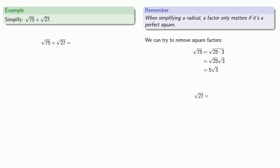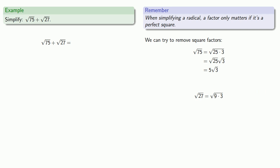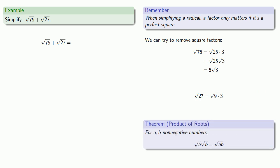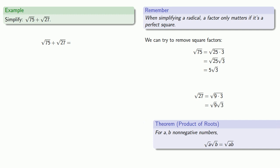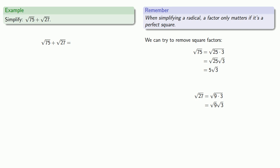Similarly, square root of 27 — I can factor this as square root of 9 times 3. The square root of a product is the product of the square roots, so this becomes square root of 9 times square root of 3. And square root of 9 is 3, so we replace it — square root of 27 is 3 square roots of 3.